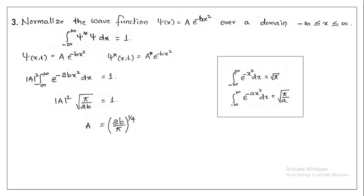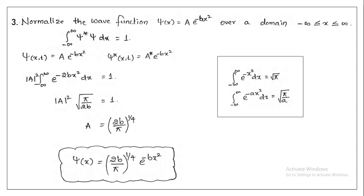Substituting and simplifying, we get the normalization constant A = (2b/π)^(1/4), since 1/√(π/2b) equals √(2b/π) and taking the square root on both sides gives the result. The normalized wave function is ψ(x) = (2b/π)^(1/4)·e^(-bx²). In the same way, wave functions involving sine or other trigonometric functions can be normalized using the same approach.